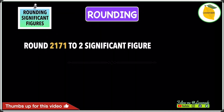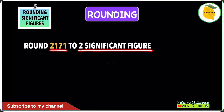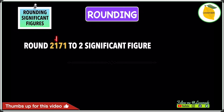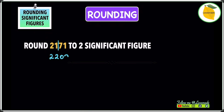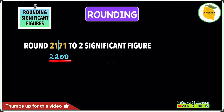In this example, we have: round 2,171 to the second significant figure. The first significant figure is 2 because it's the first non-zero digit; the second is 1. Draw a line after the 1. The number after the line is 7, which is higher than 5, so add 1 to the 1, giving you 2. Write the numbers before it as they are and replace those after the line with zeros. The answer is 2,200.